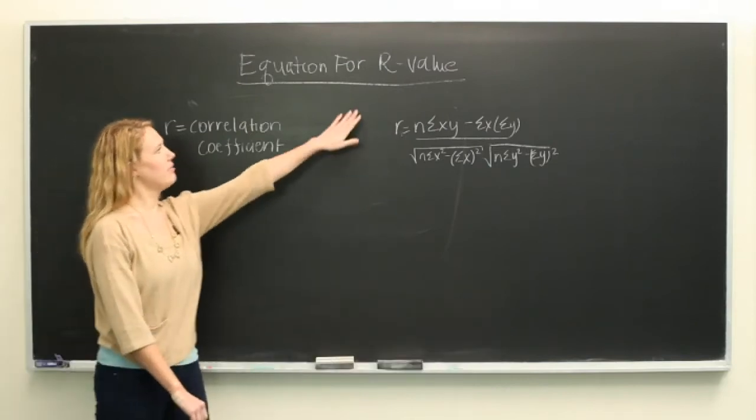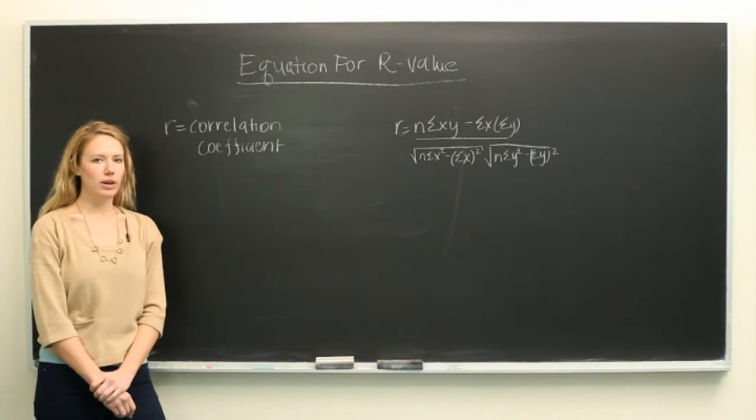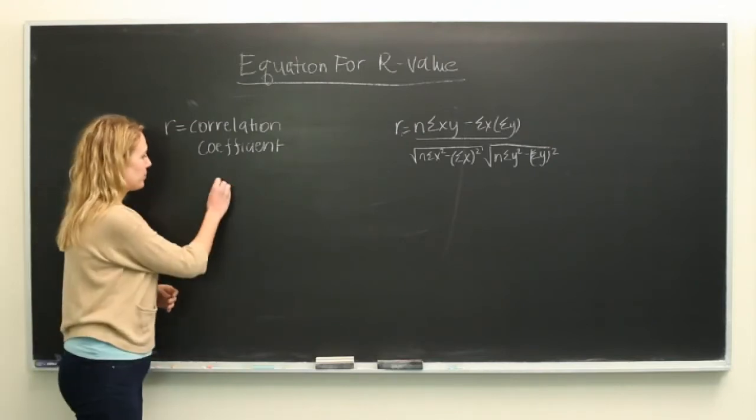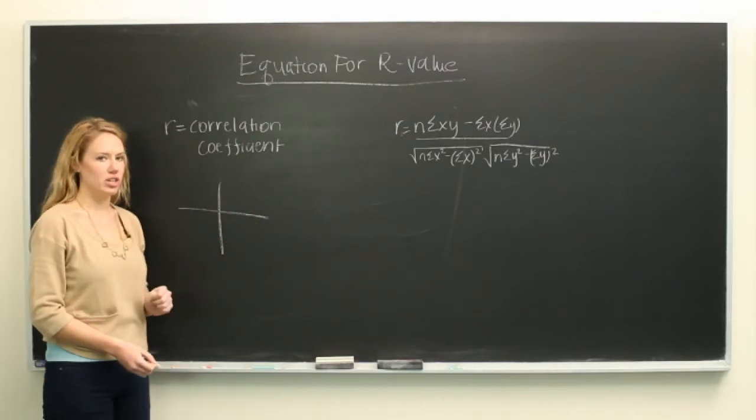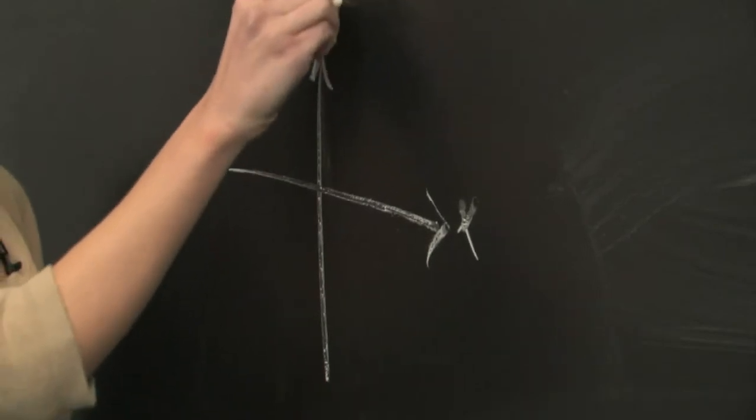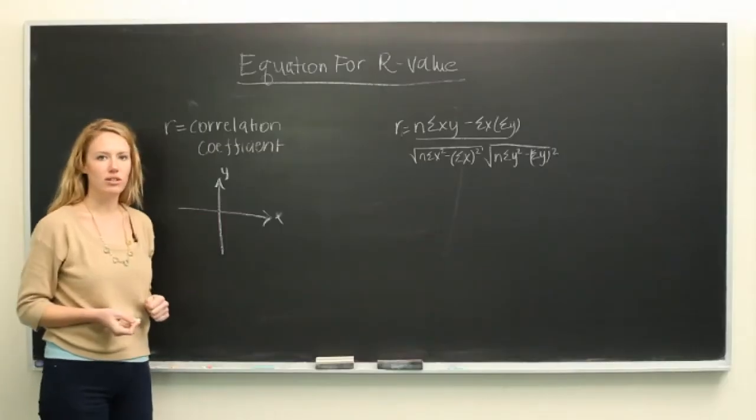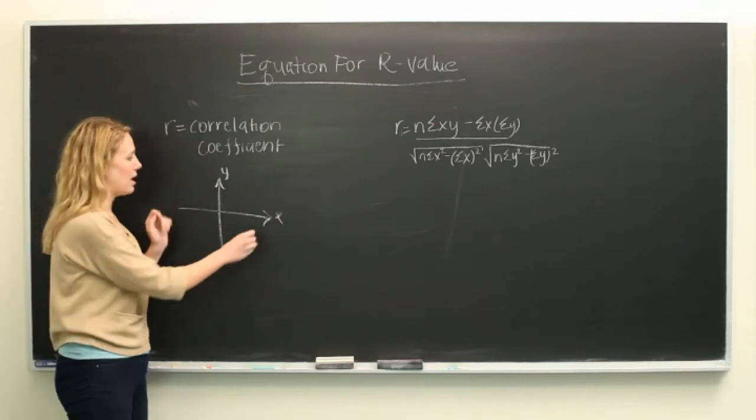So r-value is a type of value that we use in graphing that we refer to as our correlation coefficient. And r just tells you the strength and direction of your relationship between your x and your y.